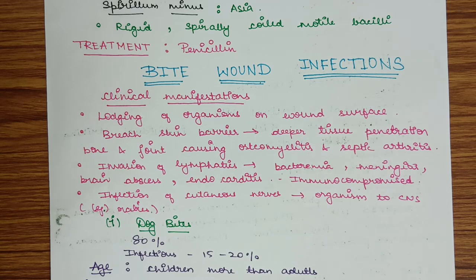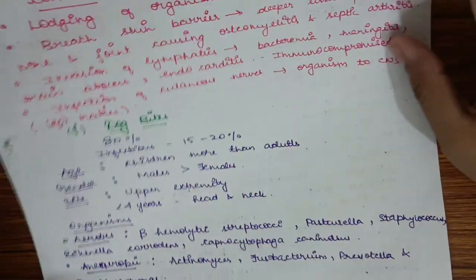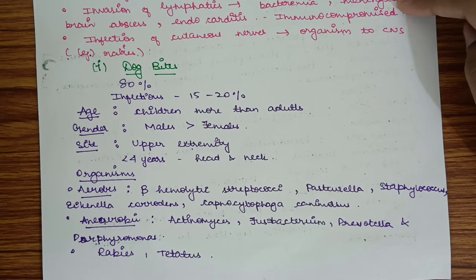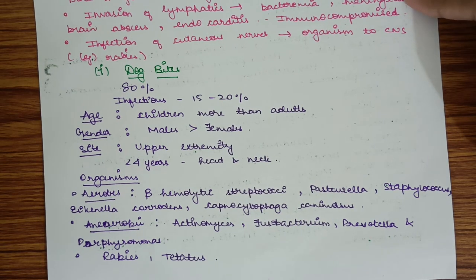Bite infections include dog bites, cat bites, and human bites. Dog bites are the most common bites, accounting for about 80% of bites. However, only 15 to 20% of these bites will turn infectious.